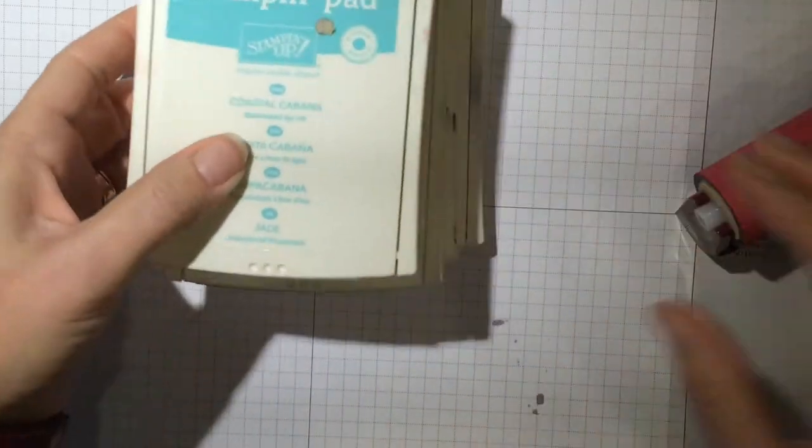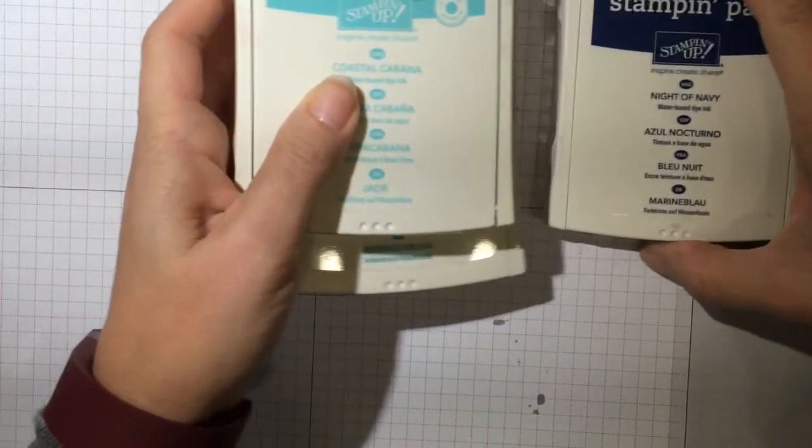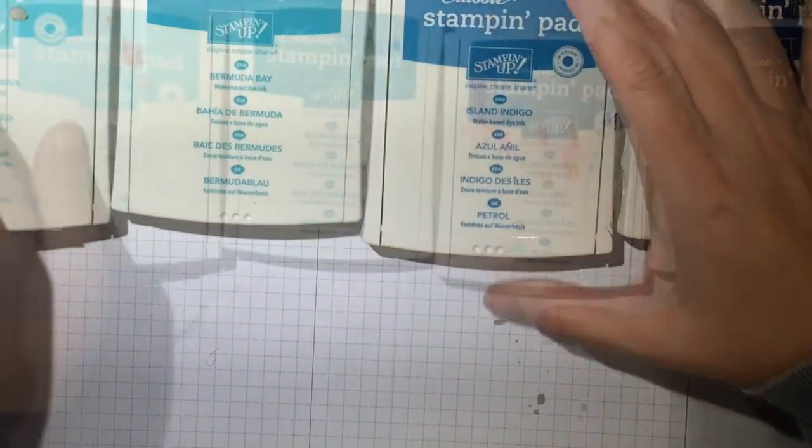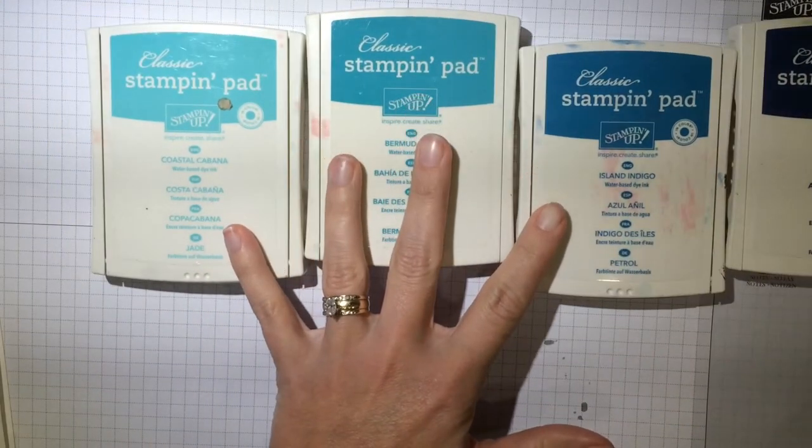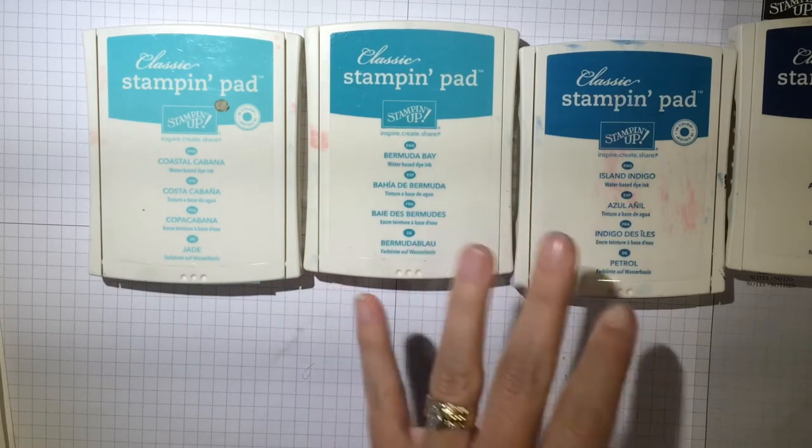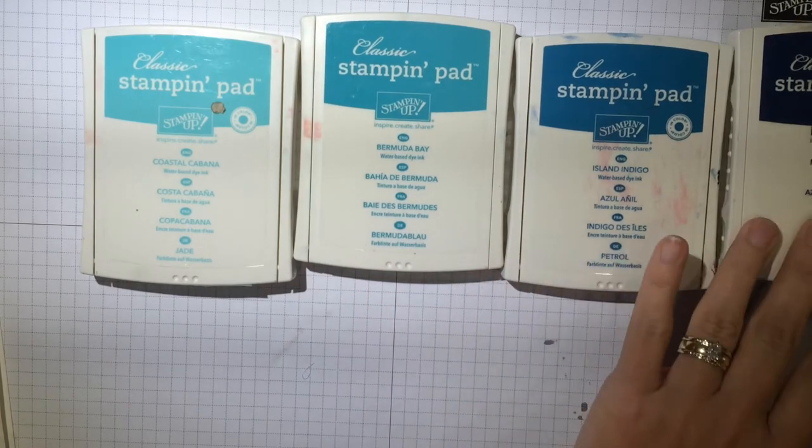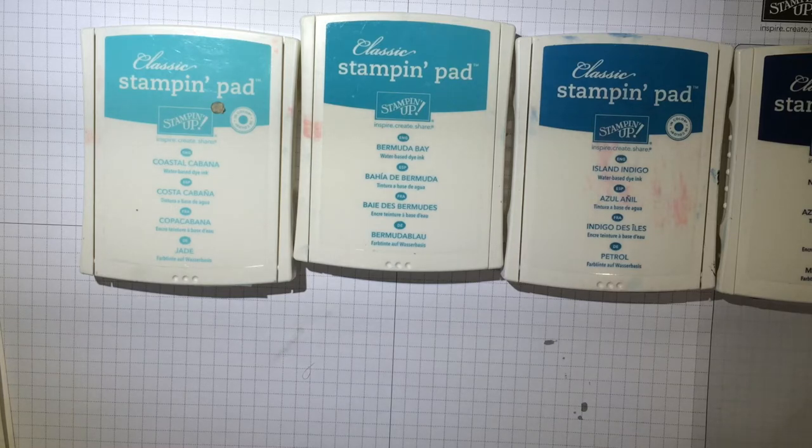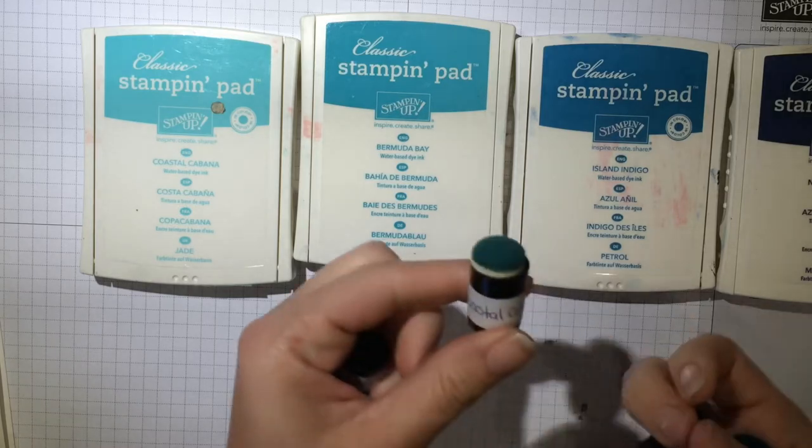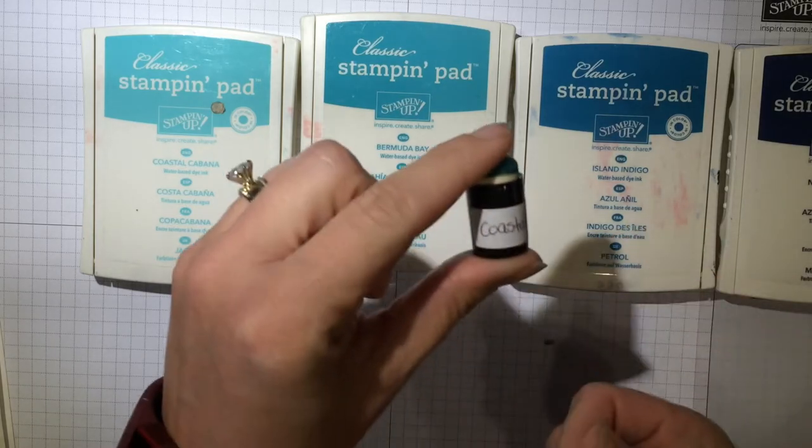The technique we did was to use daubers. And I used four different colors of ink. I started with the lightest color, Coastal Cabana, and then Bermuda Bay, Island Indigo, and Night of Navy. The other thing you're going to need are your daubers. I labeled mine so that we would use them for the correct ink.